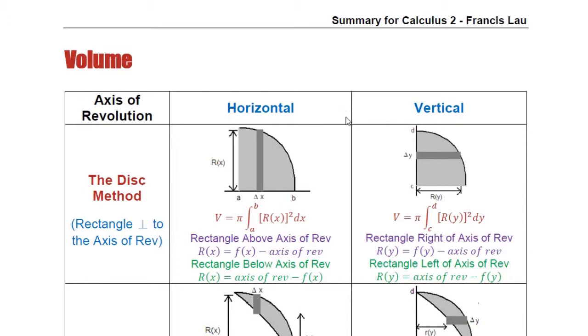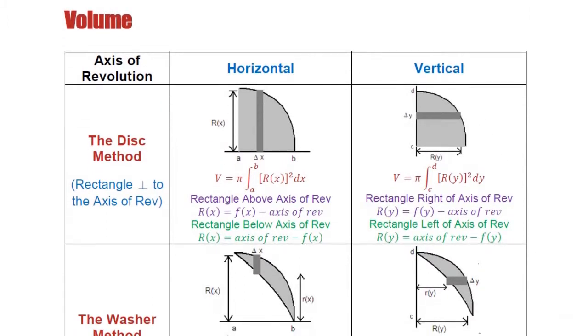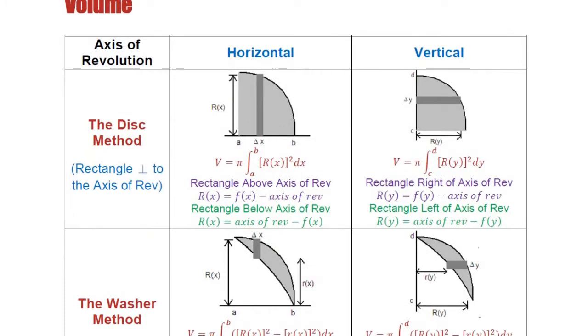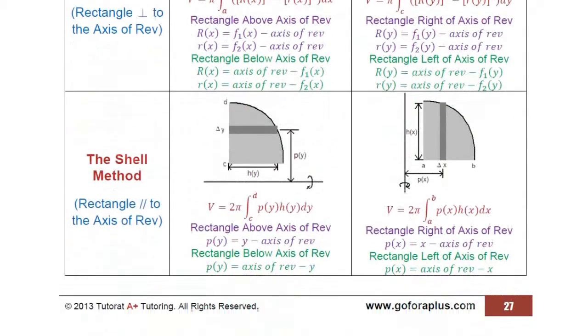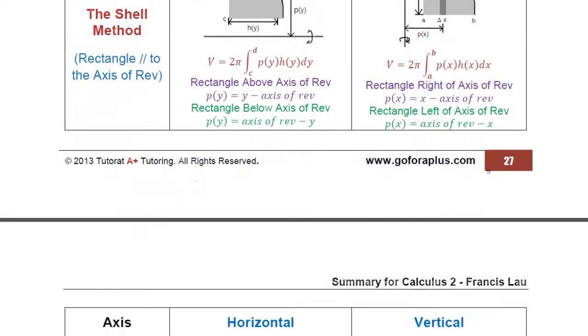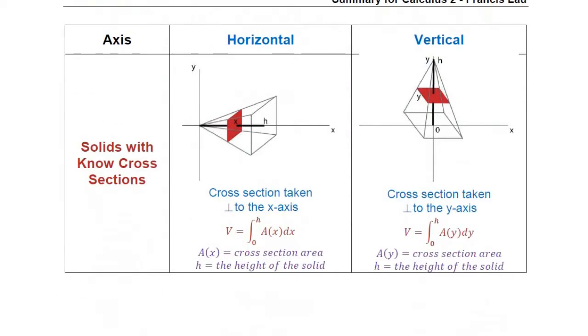So from my notes here, summary for Calculus 2, you can have different methods to find the volume using different methods, like the disk method, the washer method, the shell method, or even a cross-section area.